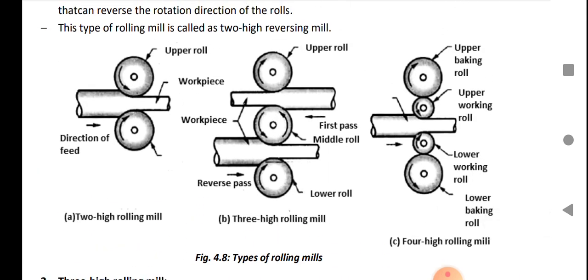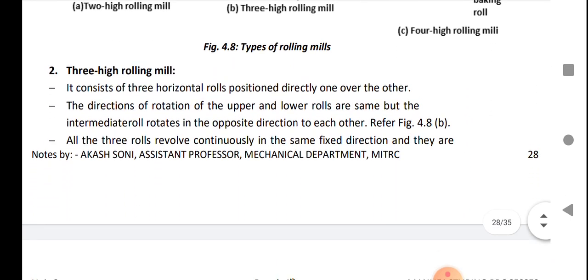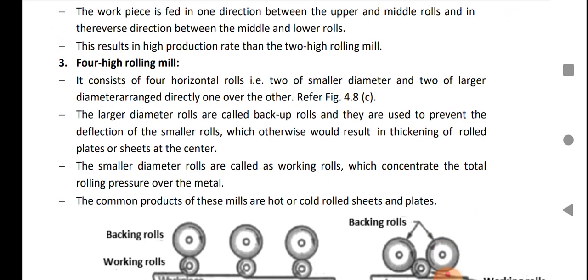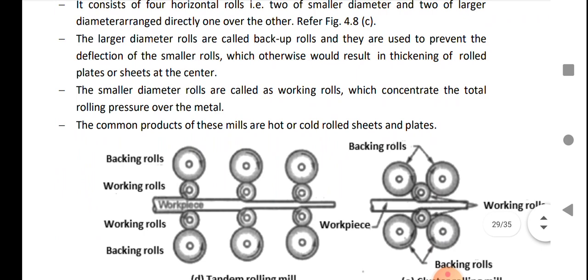Four-high rolling mills: To support the small rollers, we use upper backing roll or lower backing roll to give support to small rollers. It consists of four horizontal rolls, two of small diameter and two of larger diameter directly one over the other. The larger diameter rolls are called backup rolls and they are used to prevent the deflection of small rolls which otherwise would result in thickening of rolled plate or sheet at the center. The small diameter roll is called working roll which concentrates the total rolling pressure over the metal. The common products of this mill are hot or cold rolled sheets and plates.